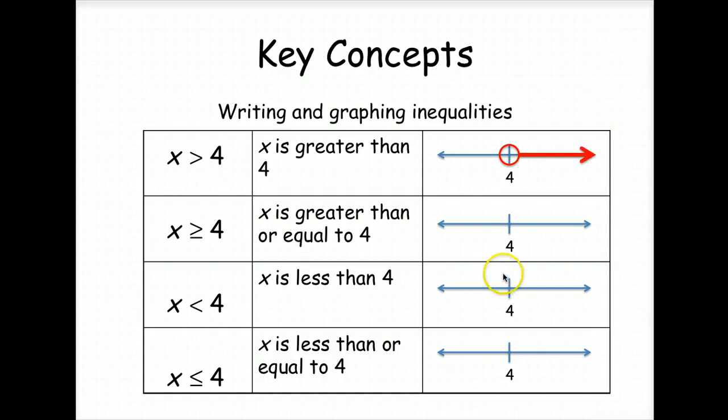Okay, now that you have that done, we're going to graph x is greater than 4. So notice it doesn't say or equal to, so we have an open circle, and then we continue to the right. This is greater than or equal to, so we have a closed circle, and it also goes to the right. X is less than, there is no equal to, so it's an open circle, and it goes to the left, it's less than 4. And this one has an or equal to, so it's a closed circle, and it is less than.